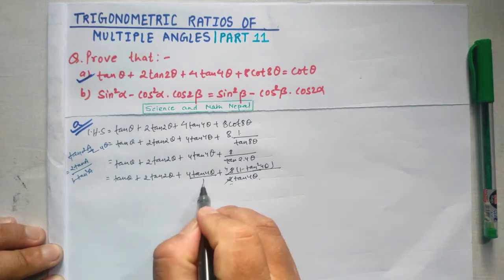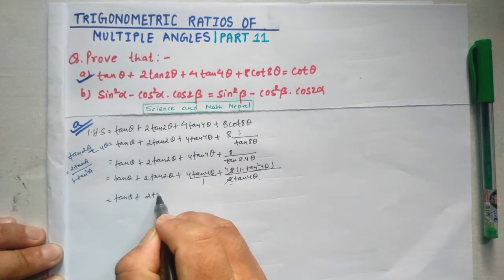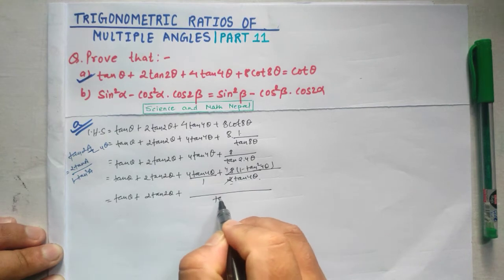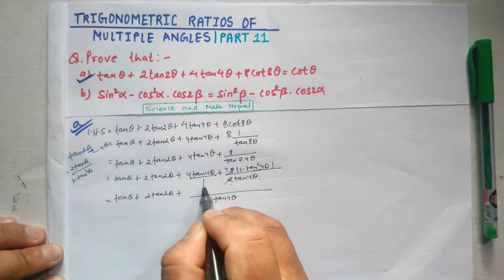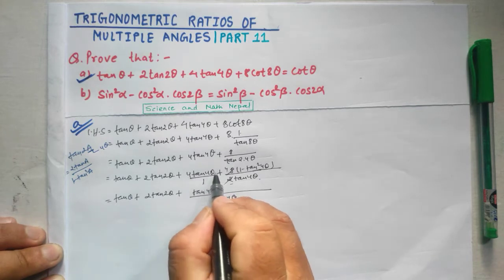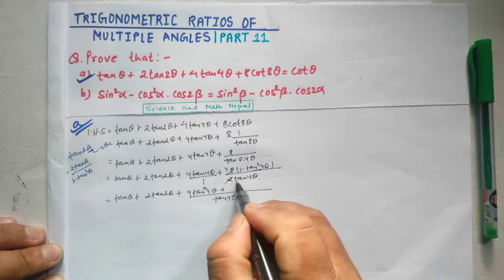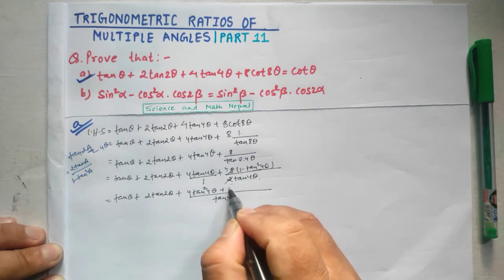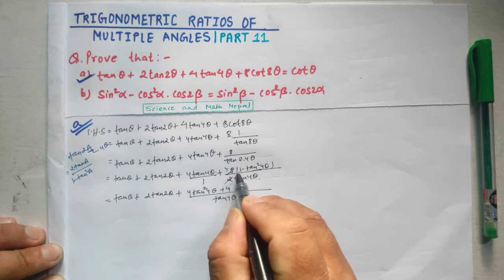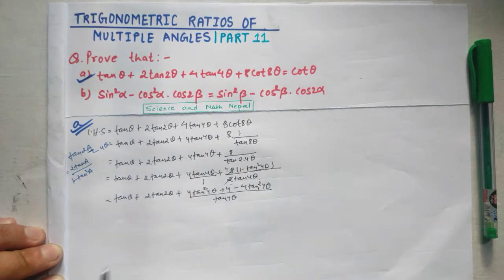This simplifies by cancelling the factor of 2, giving 4 times (1 minus tan² 4θ) divided by tan 4θ, which equals 4 divided by tan 4θ minus 4 tan 4θ. Adding the 4 tan 4θ term from the original expression, the 4 tan 4θ and minus 4 tan 4θ cancel out.